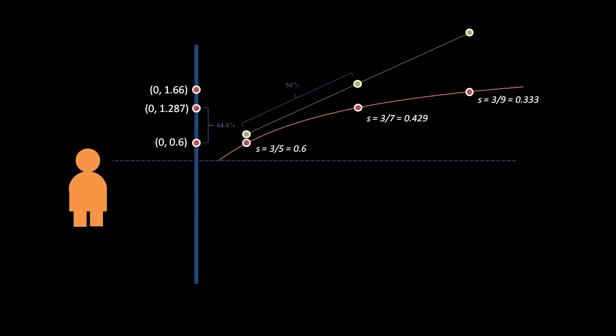An important thing to note here is that though the 3D coordinate in the middle lies directly 50% between the other two coordinates, we can't say the same of its corresponding perspective-adjusted coordinate and the other coordinates. 1.287 is actually about 64.4% of the way from 0.6 to 1.66.